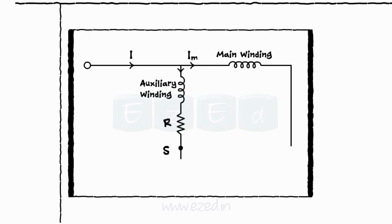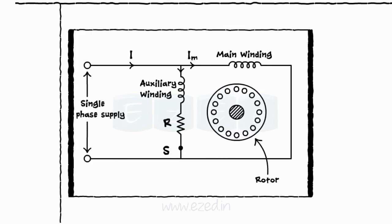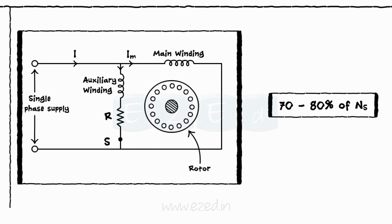A centrifugal switch is connected in series with the auxiliary winding and is located inside the motor. Once the motor reaches the speed of 70-80% of synchronous speed, the starting auxiliary winding is disconnected from the supply with the help of this switch.